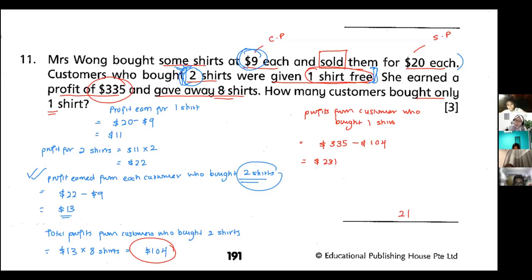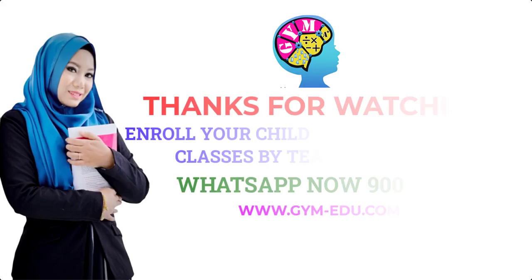So from there, can I find out how many of them bought only one shirt? Yes. So I take $231 divided by my normal profit, and I will get 21. So 21 customers bought one shirt.